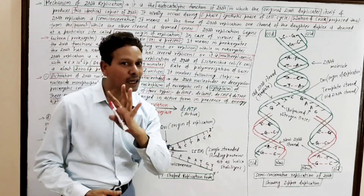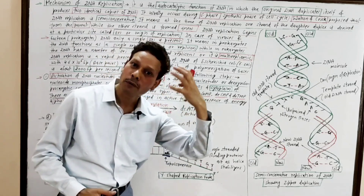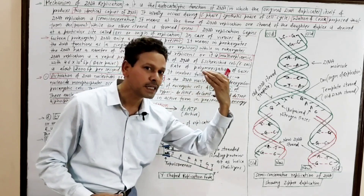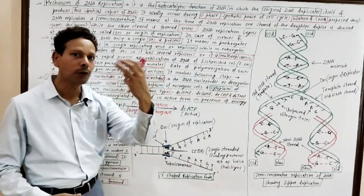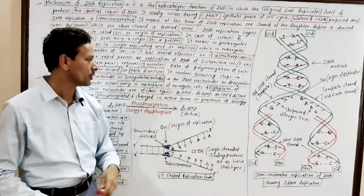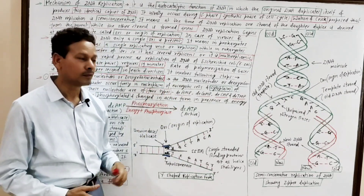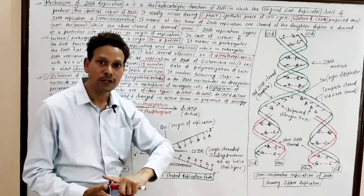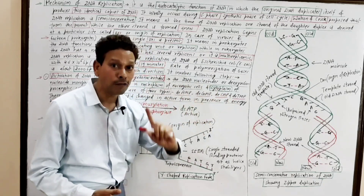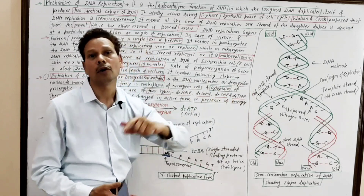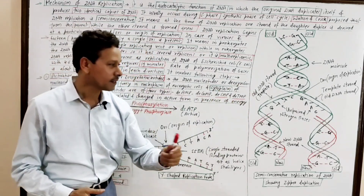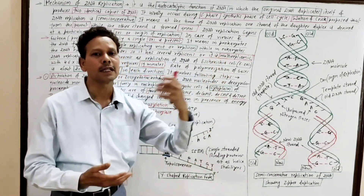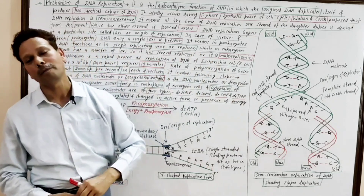DNA replication in eukaryotes occurs in the nucleus, but in prokaryotes such as E. coli bacteria, the process takes place in the cell cytoplasm. The four nucleotides involved in DNA replication are dAMP (deoxyadenosine monophosphate), dGMP (deoxyguanosine monophosphate), dCMP (deoxycytidine monophosphate), and dTMP (deoxythymidine monophosphate).